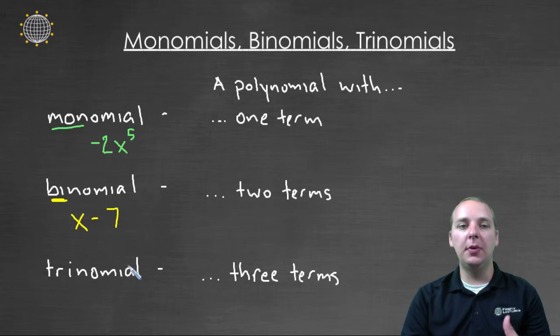That would be an example of a binomial. You have two terms that are being added or subtracted together, whereas a monomial only has one. And then lastly we have this thing called a trinomial.